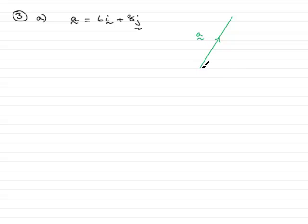And it's going to have a component of 6 units in the i direction, followed by 8 units upwards in the j direction. And this is the angle that I want to find. Let's call it theta.